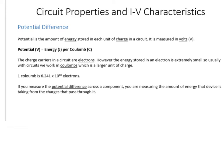First of all, potential difference. A lot of people get this confused with voltage, but they're two different things. Potential is the amount of energy stored in each unit of charge in the circuit, and it's measured in volts. Each charge carrier in an electronic circuit has a certain amount of energy associated with it, determined by the power source you're using.